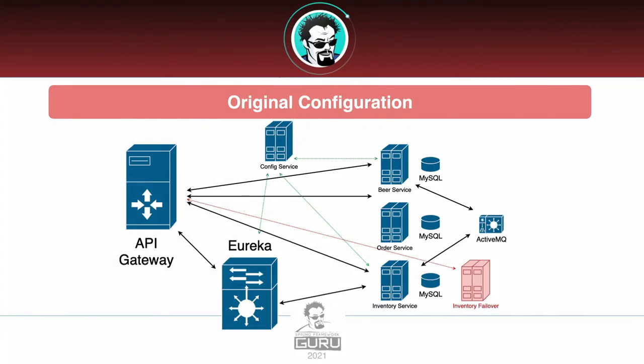In the original configuration, this was designed for a non-Kubernetes environment. We are using Spring Cloud Gateway in front of the services, Eureka for service discovery, Spring Cloud Config for configuration services, and then the three services are each deployed with their own MySQL backend, and also ActiveMQ for our JMS broker.